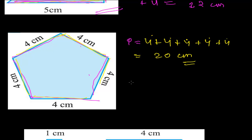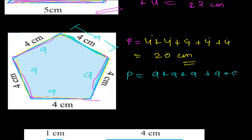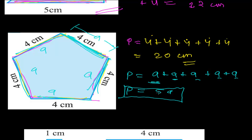There is another formula to find the perimeter of a regular pentagon. If all sides are of equal length 'a', then a is repeated 5 times, so a plus a plus a plus a plus a equals 5a. Here 'a' represents the side of the pentagon, so the perimeter of a regular pentagon is 5a. This formula is only for a regular pentagon. Here, 5 times 4 equals 20 centimeters.